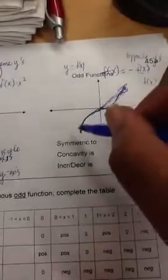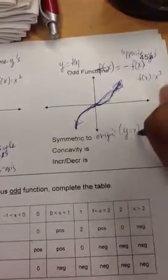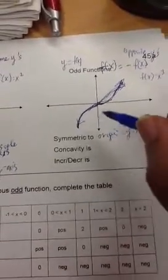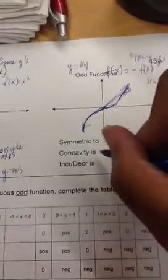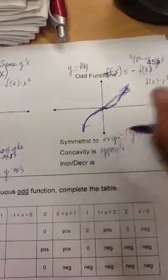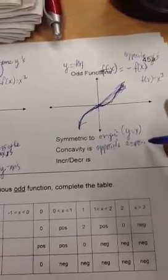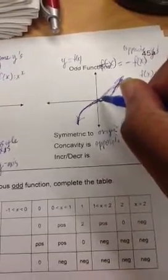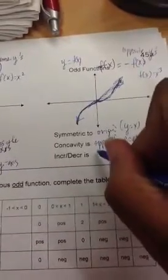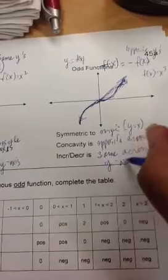If I look at this function, it's symmetric at the origin — or along the line y equals x. The concavity: on the left-hand side it's concave down, but on the right-hand side it's concave up. So the concavity is opposite across the y-axis. And for increasing and decreasing: it's increasing on the left-hand side, and when it gets to the right-hand side it's also increasing. So increasing and decreasing is the same across the y-axis. You should be able to fill out that third example.